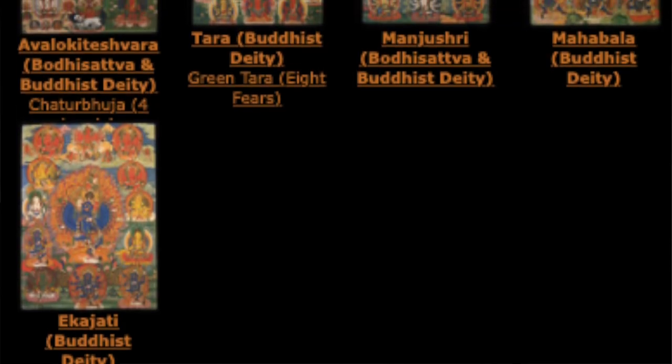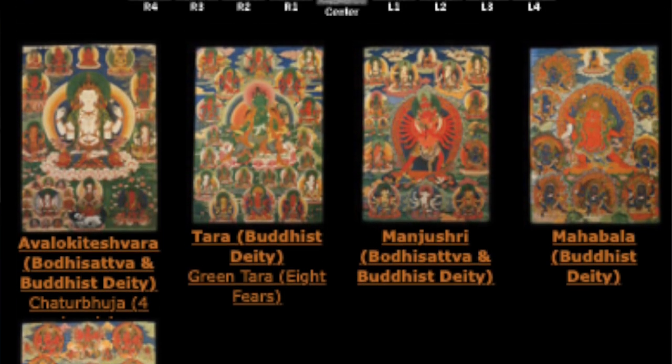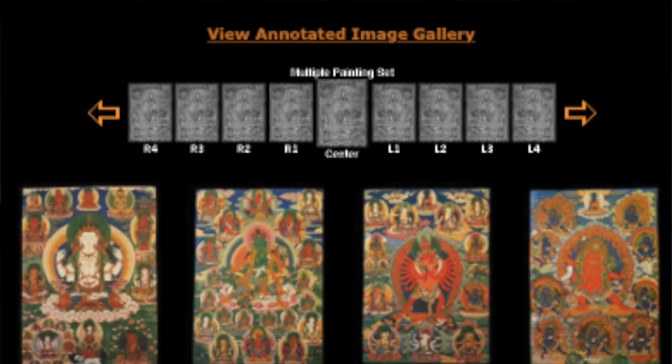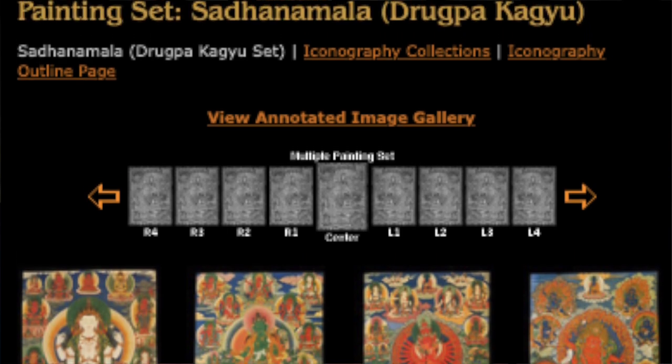For this set, this is a Drupthap Gyatso-based set. We know it was the 9th Je Kempo, Shakya Rinchen, who lived between 1710 and 1759, and he wrote one of these edited versions, which is very popular within the Drupthap Gyatso of Bhutan, containing approximately 142 to 143 different deity forms. What we can look at today is a set of only five known paintings from the larger set. Because it has between 10 and 15 figures per painting, it could be an 11 to 15 or 17 painting set.